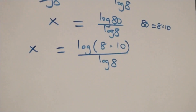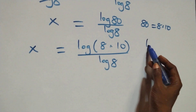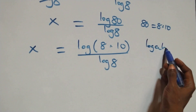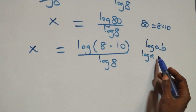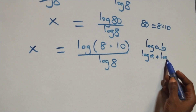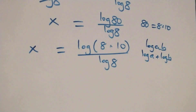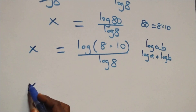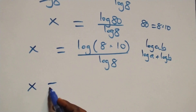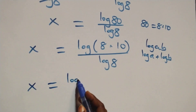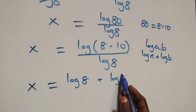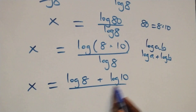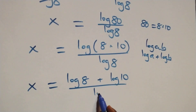This follows the log product rule: log(a times b) is the same as log a plus log b. So we have x equals log 8 plus log 10, all over log 8.